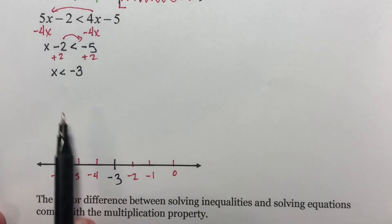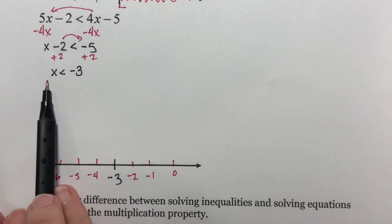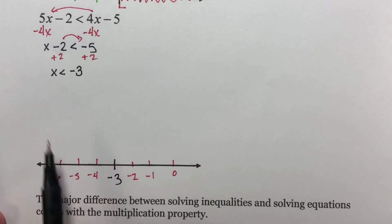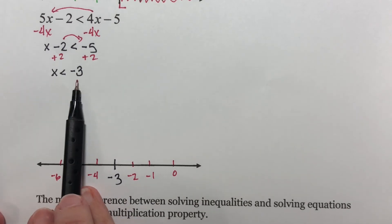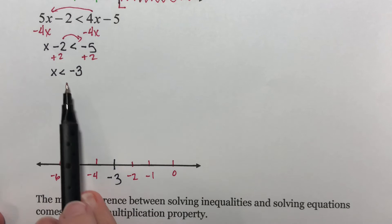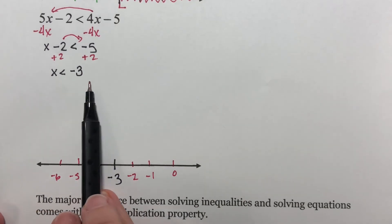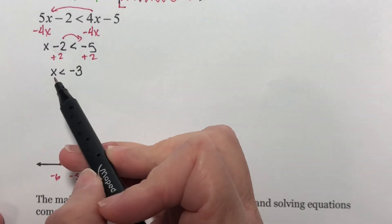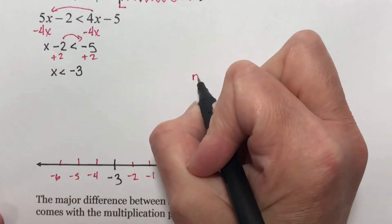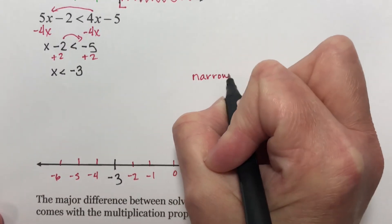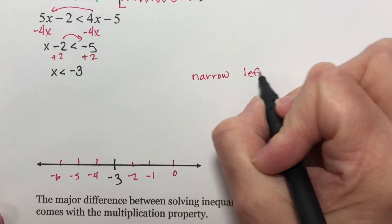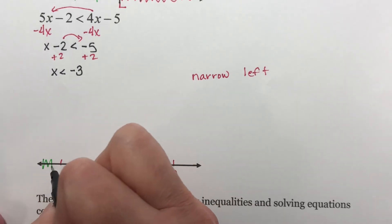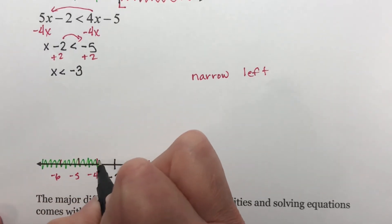You can pick numbers and see. If I check negative 2, is negative 2 less than negative 3? No, it's not. It might help you to use 0. 0 is definitely not smaller than negative 3, so I'm not shading in this direction. My variable is also on the narrow side. Narrow goes to the left. So I'm supposed to shade the left-hand side of that negative 3.